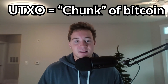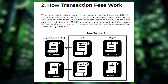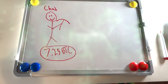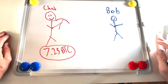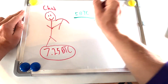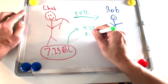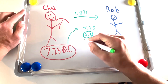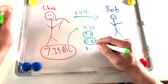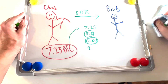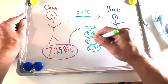A UTXO is simply a chunk of Bitcoin. Each Bitcoin transaction contains inputs and outputs. Let's imagine that Chad wants to pay Bob 5 BTC, and let's assume that this 7.25 is the only Bitcoin that Chad has. The way the network processes this transaction is it's going to take that UTXO of 7.25 — that's the input — and it's going to break it off into three new UTXOs, the outputs.